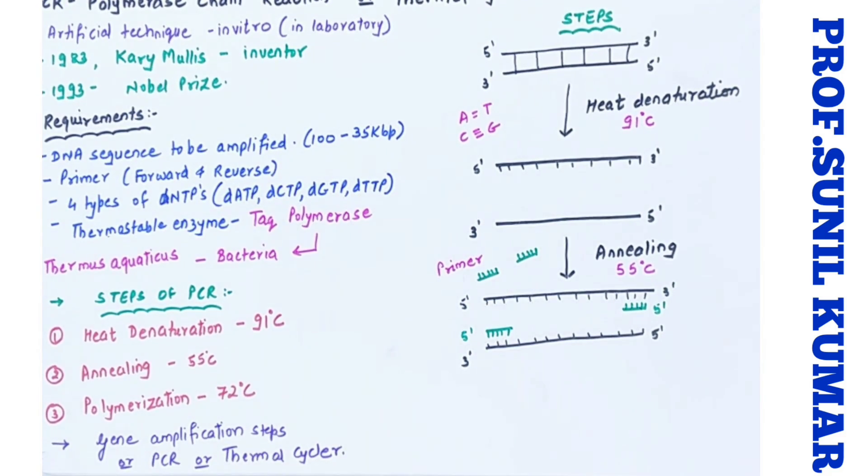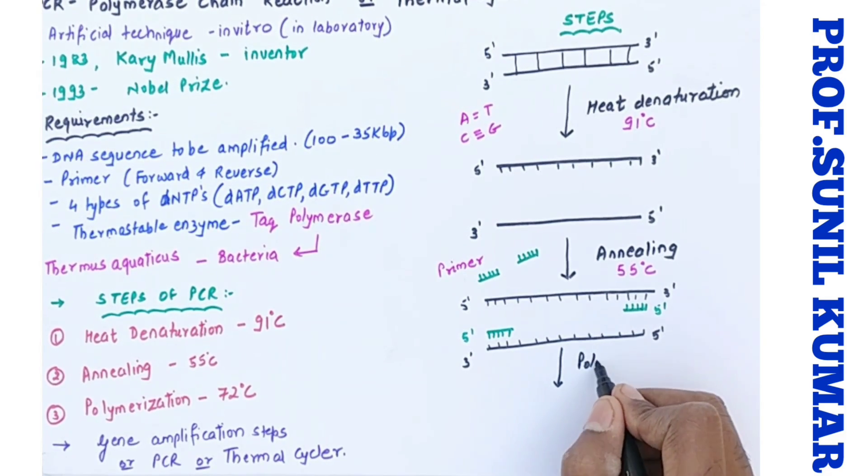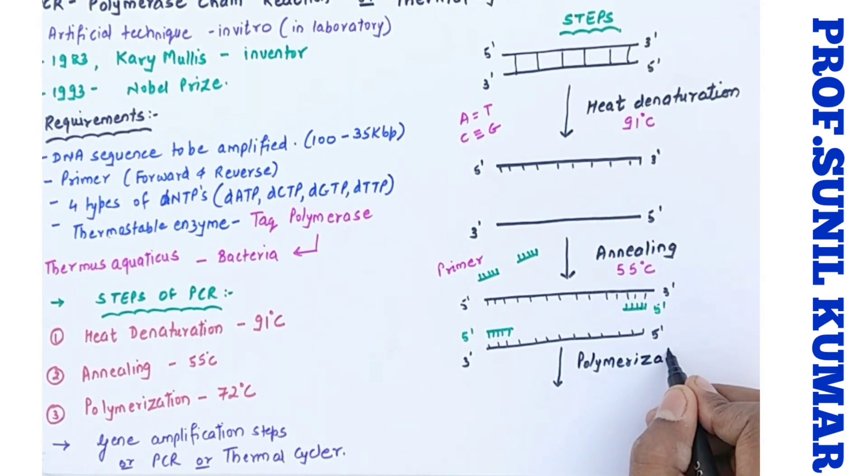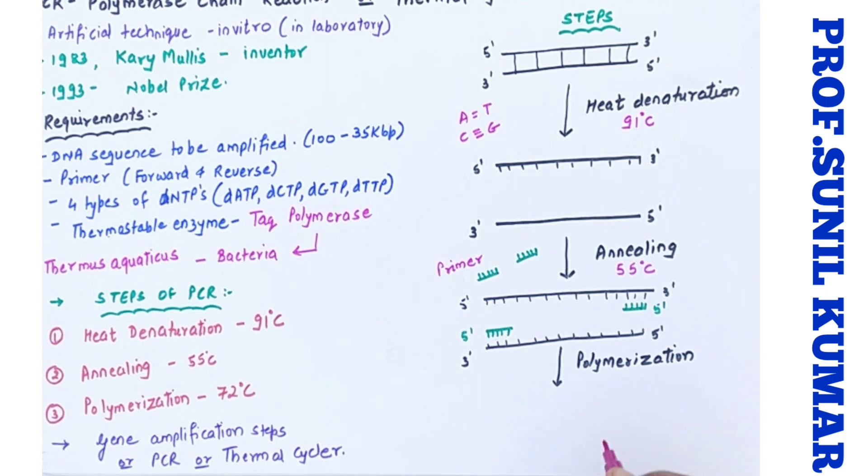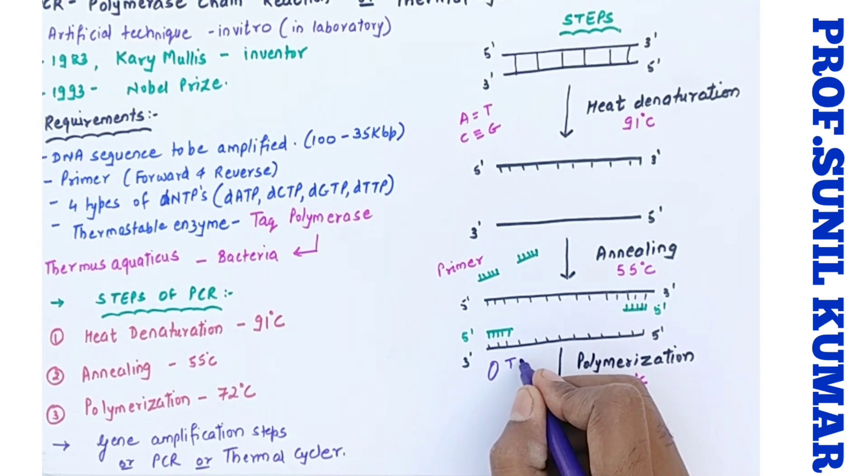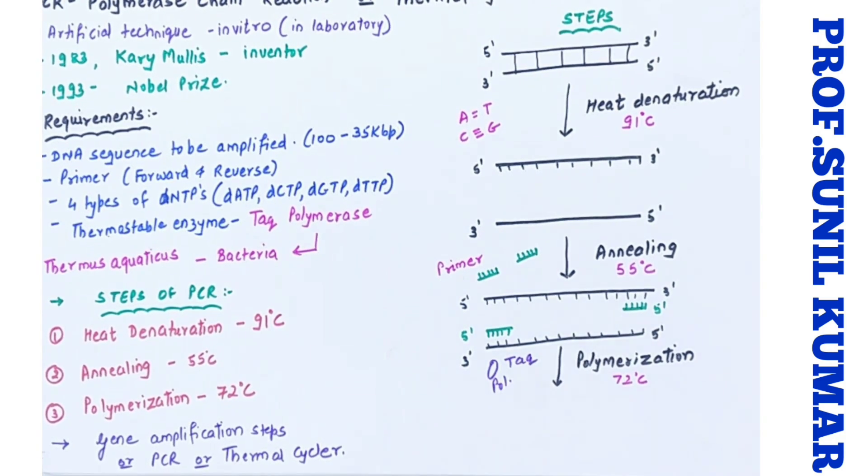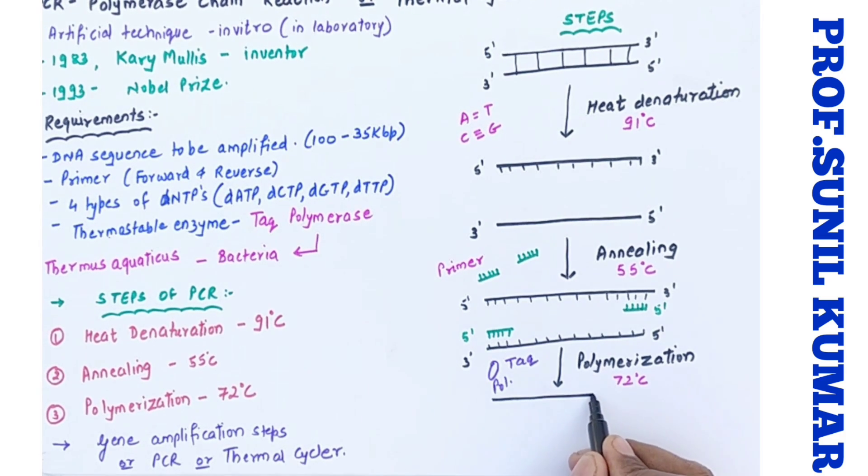So this is a backward primer and this we call it as forward primer. Now we need to somewhere increase the temperature, so that is the third step, polymerization. Here the temperature is raised to 72 degrees Celsius and the most important enzyme of PCR is brought into picture, that is Taq polymerase obtained from Thermus aquaticus.